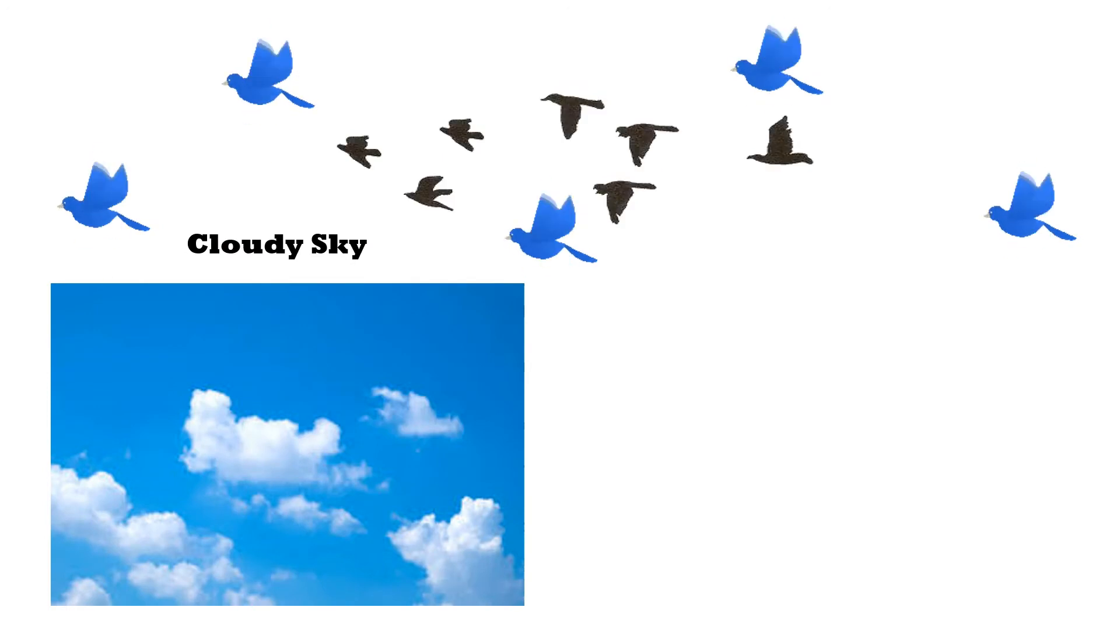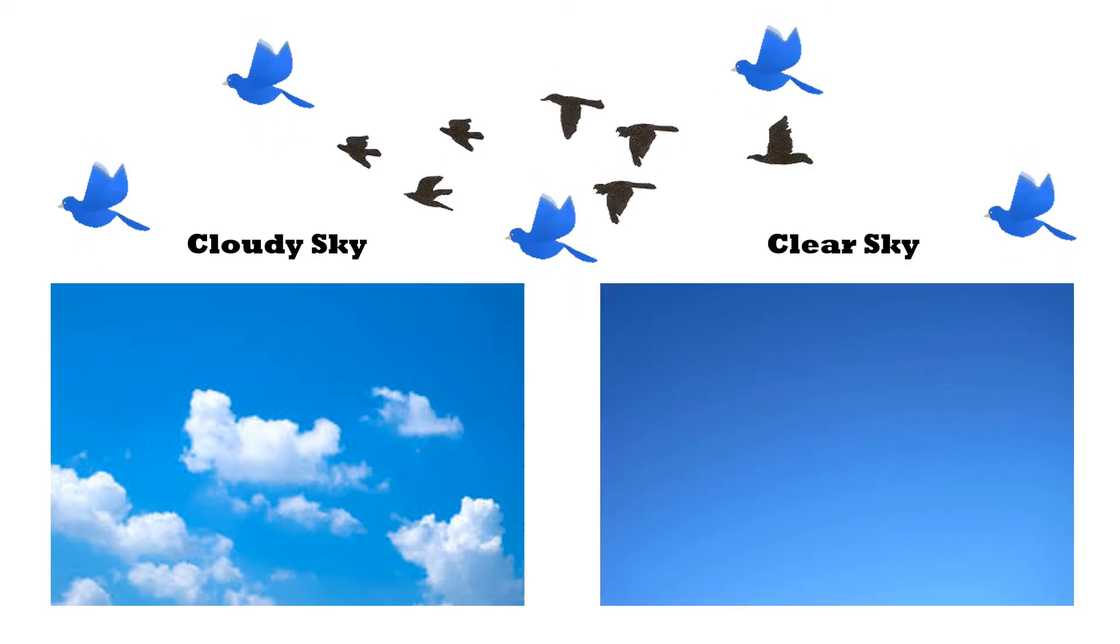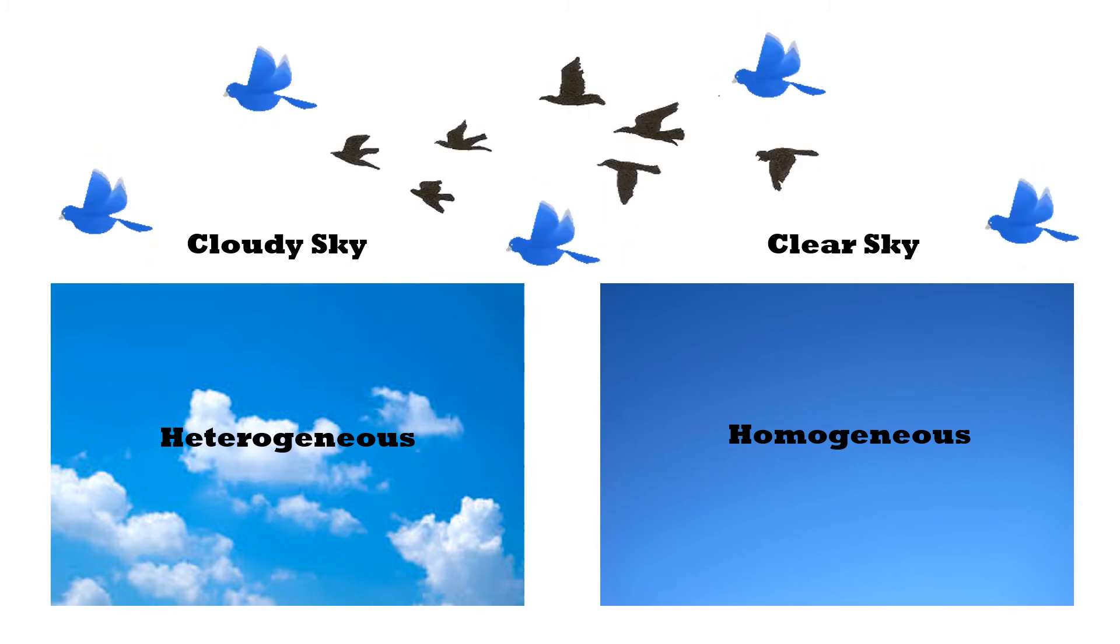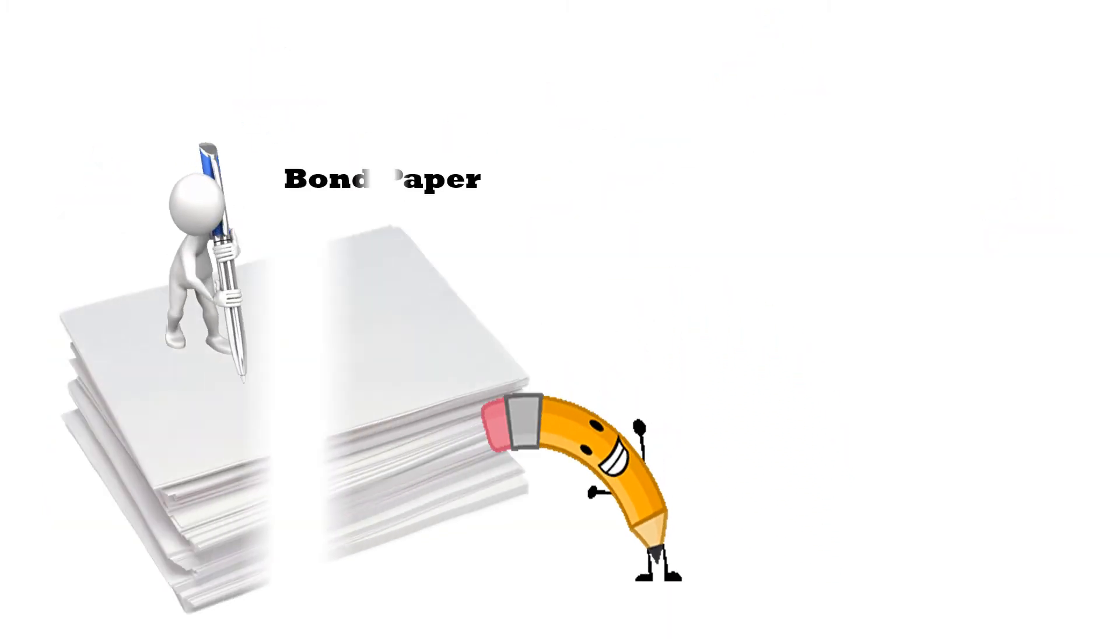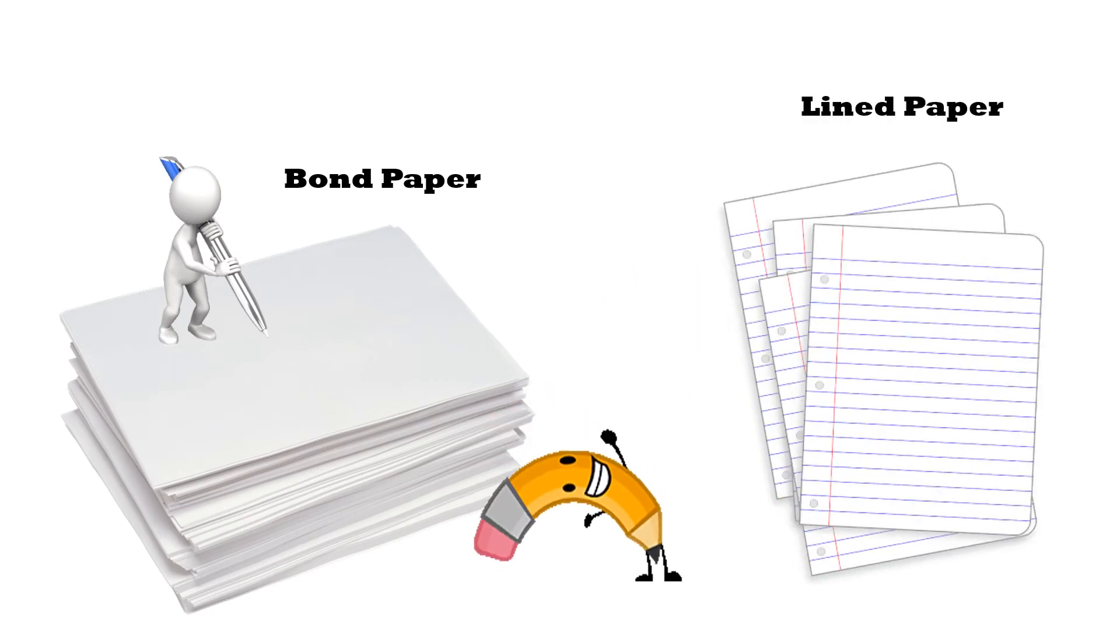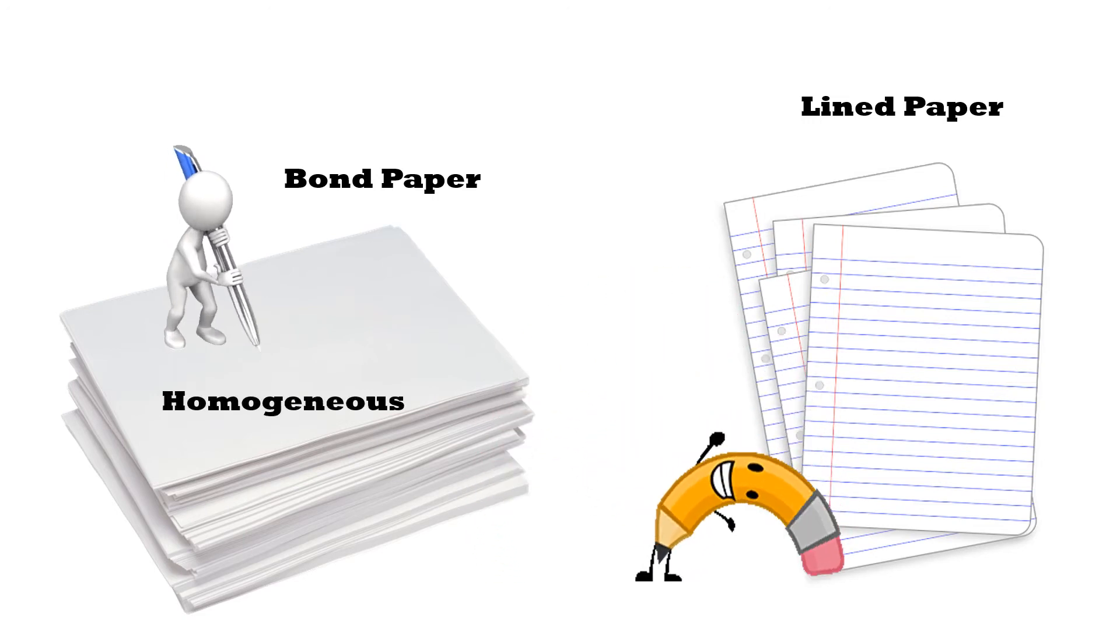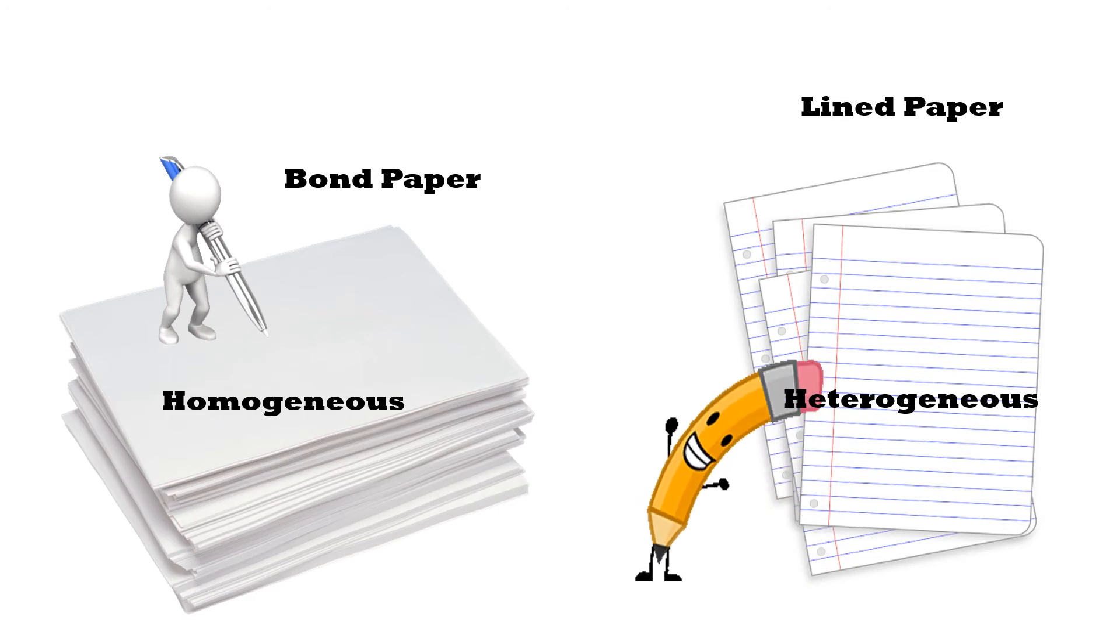Let's have a quick check if you understood the difference between homogeneous and heterogeneous mixtures by just looking at a picture. First, we have a cloudy sky and clear sky. Which of them is homogeneous and heterogeneous? Very good! Cloudy sky is heterogeneous while clear sky is homogeneous. Next, we have bond paper and lined paper. Very good again! Bond paper is homogeneous and lined paper is heterogeneous.